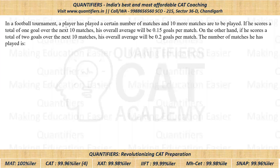In a football tournament, a player has played a certain number of matches and 10 more matches are to be played. If he scores a total of one goal over the next 10 matches, his average will be 0.15. If he scores two goals over the next 10 matches, his average will be 0.2 goals per match. We have to find the number of matches he has played till now.